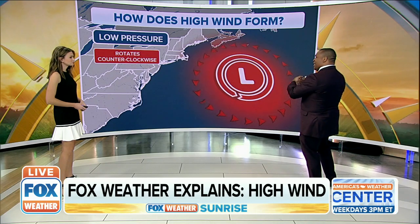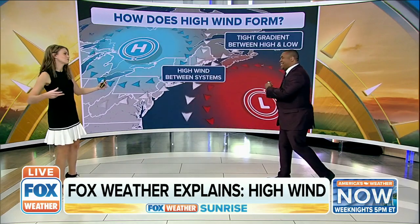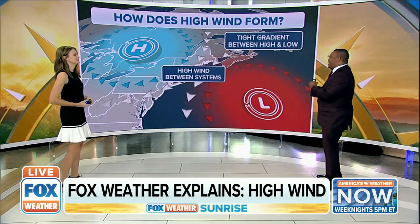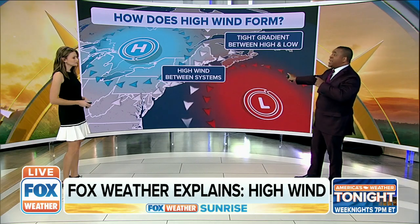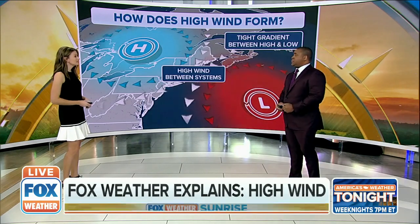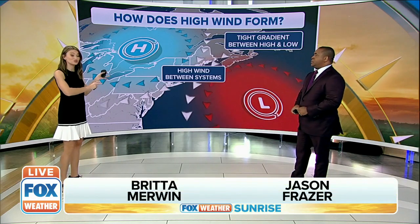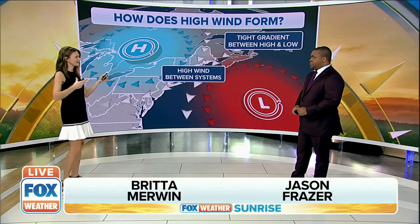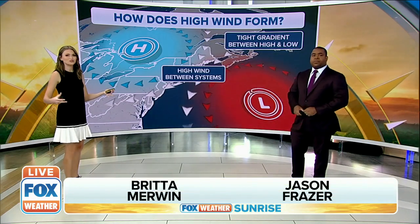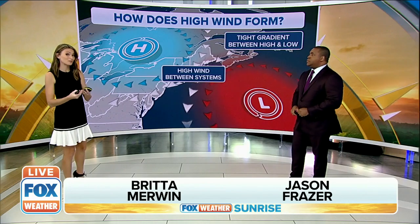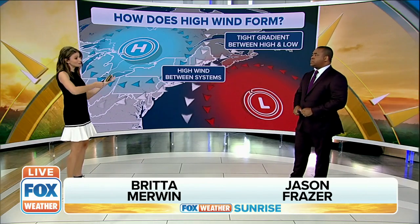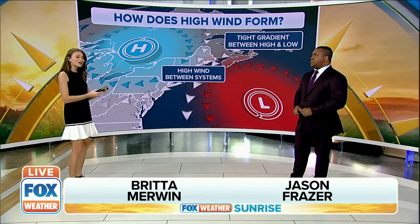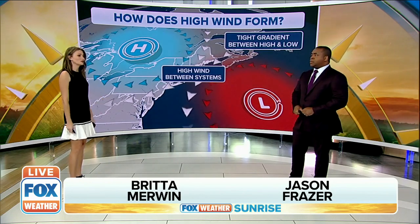What we don't really like is when these two systems start butting up against one another, because it's like having two siblings in one room — that's when you get higher winds, and we saw this with the nor'easter. This is what we call a tight pressure gradient. What it boils down to is: the closer the areas of high and low pressure are, the stronger the wind. Wind always flows from high to low pressure, and the closer they are, the more impressive the wind gusts.